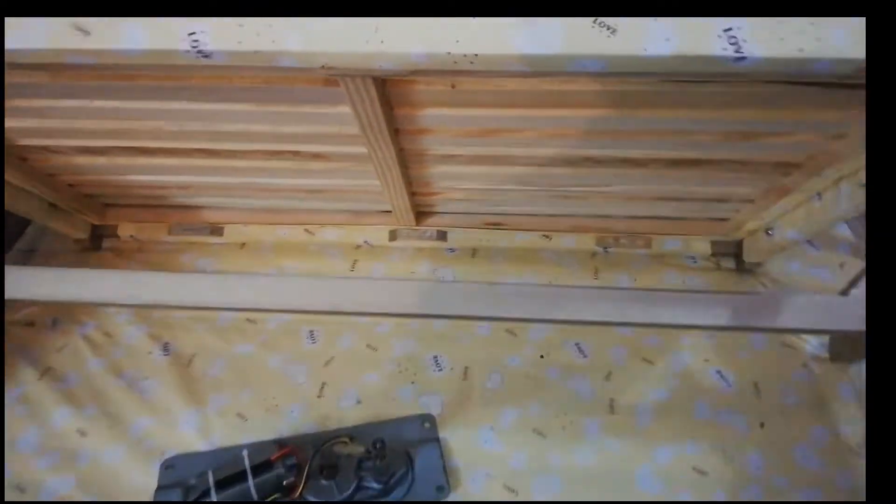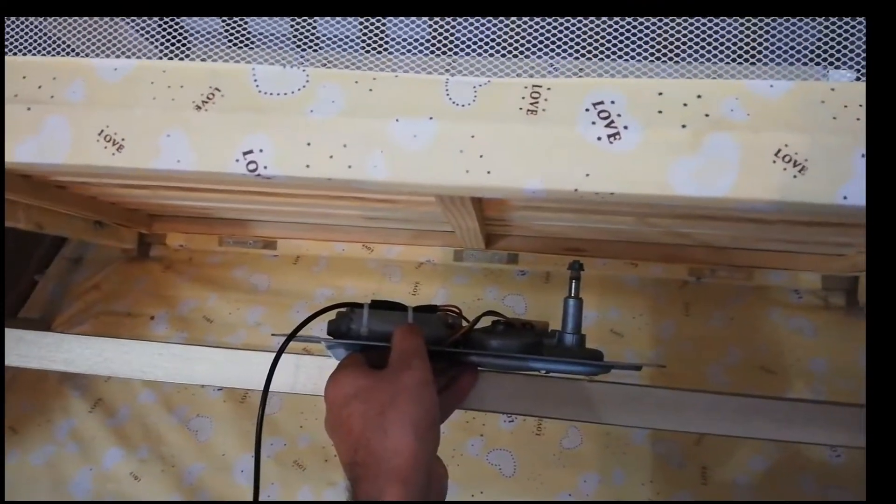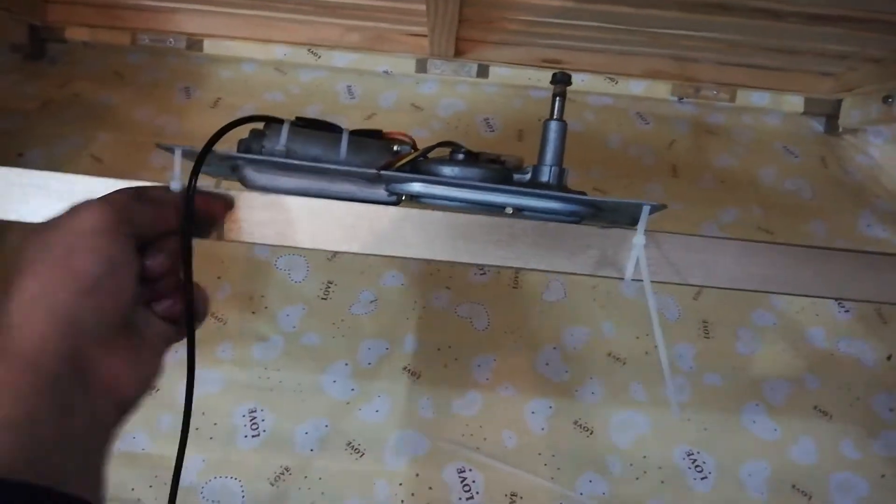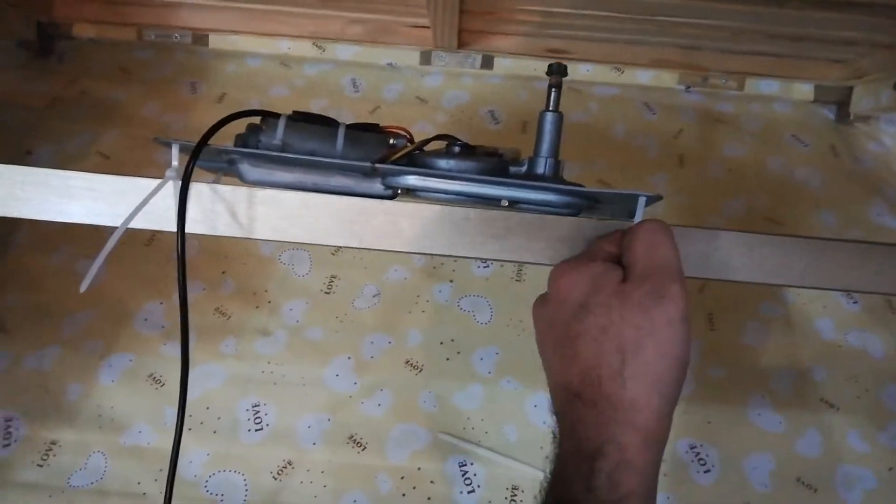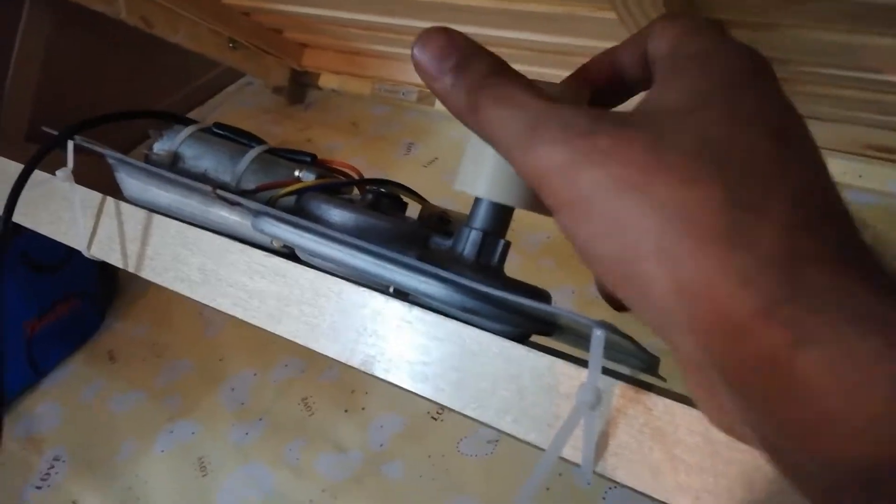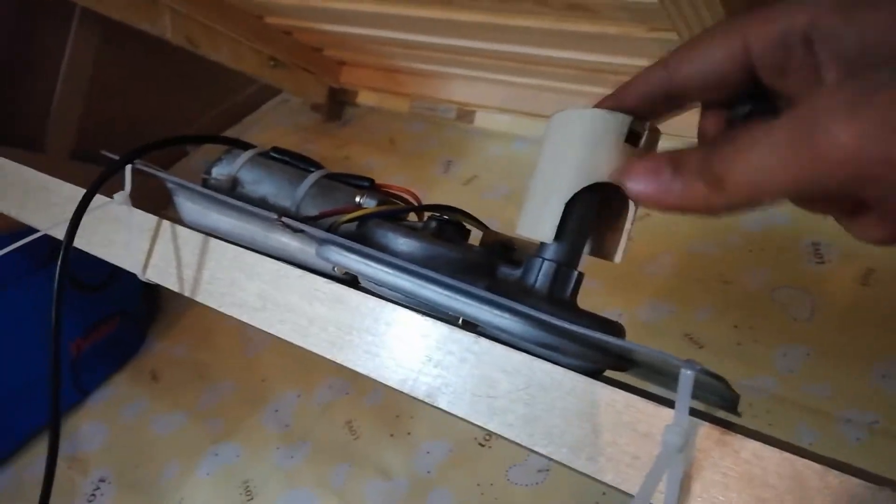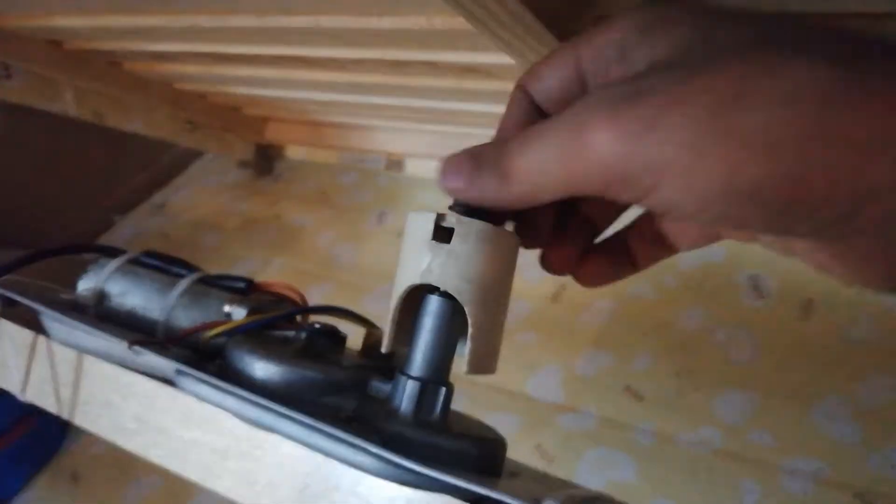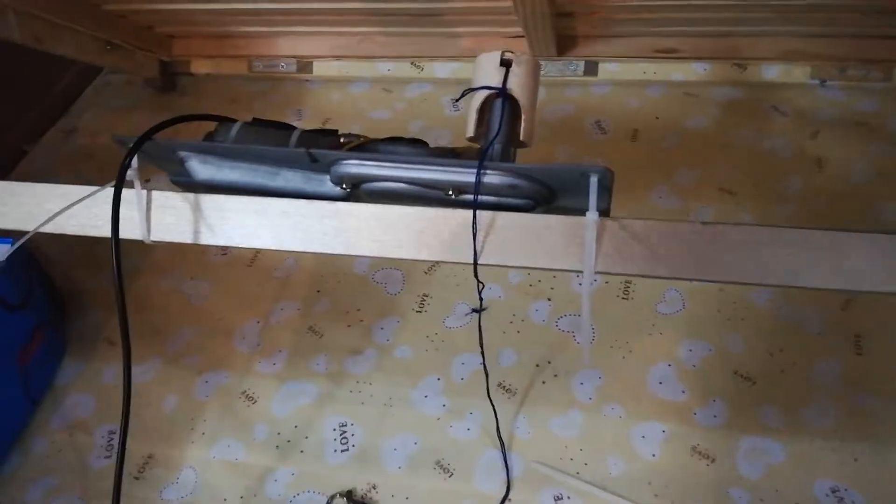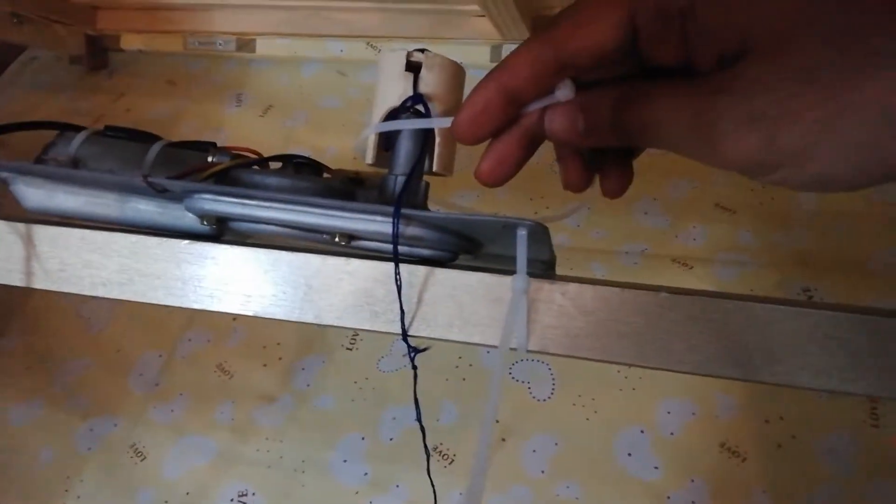First of all, we will install the wiper motor at the bottom of the cot with cable ties so it will become invisible there. Next, we will install a sleeve to enhance the leverage of the wiper motor. Then the string is wrapped around this sleeve that will pull to move the cot.